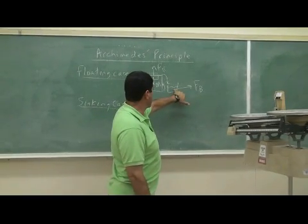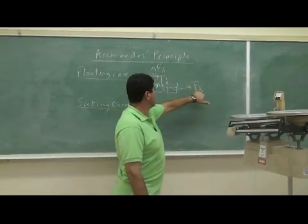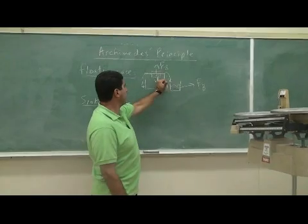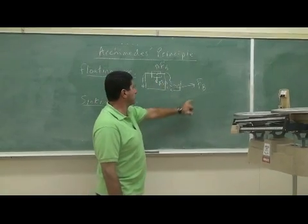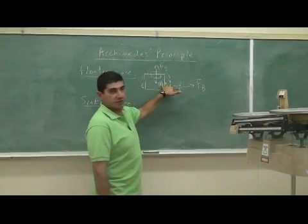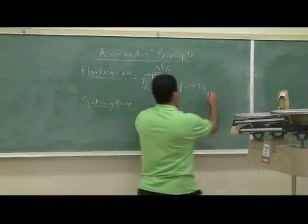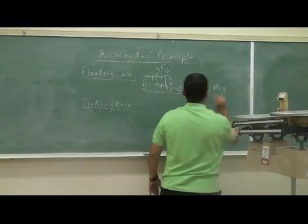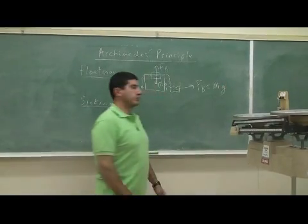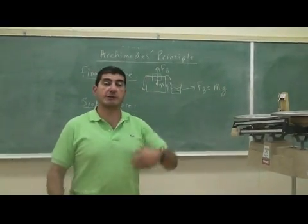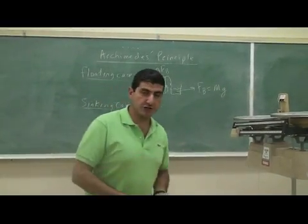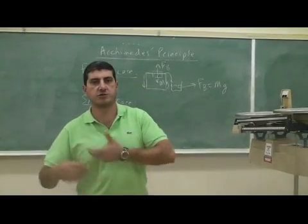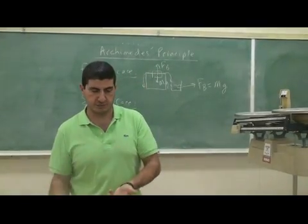So I'm going to weigh this water — that's the buoyant force. And since the object is floating, I know the buoyant force is equal to its weight. The buoyant force is equal to its weight, so therefore I'm going to weigh the object and it should be equal to the weight of the water that it displaces.